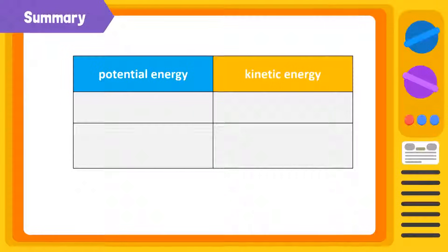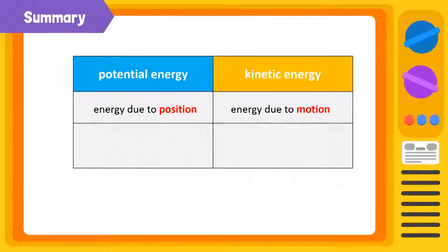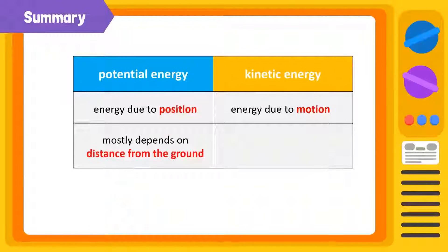Let's summarize. Potential energy is the energy of a body due to its position. Kinetic energy, on the other hand, is the energy of a body due to its motion. Potential energy mostly depends on the distance of a body from the ground. Kinetic energy depends on its speed.